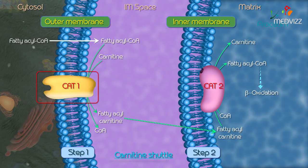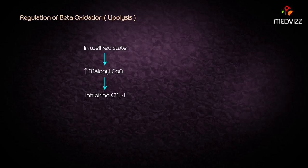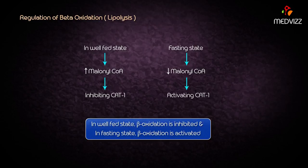Glucocorticoids, growth hormone, and thyroid hormone induce the synthesis of hormone sensitive lipase, which activates lipolysis. Another regulatory mechanism is by carnitine acyl transferase 1 (CAT1), which regulates fatty acid oxidation because it is allosterically inhibited by malonyl CoA. In the well-fed state, more malonyl CoA is produced which inhibits beta oxidation, while during fasting states there is less malonyl CoA, which activates beta oxidation by activating CAT1.